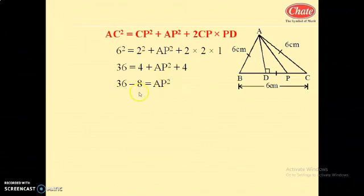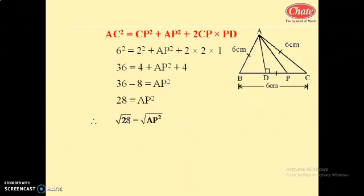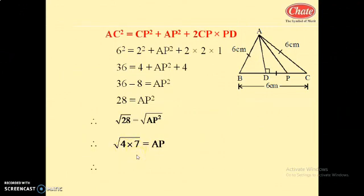Now 36 equals 4 plus AP squared plus 4, so AP squared equals 36 minus 8, giving AP squared equals 28. AP equals square root of 28. Factoring 28 as 4 into 7, square root of 4 is 2, so AP equals 2 root 7 centimeters.